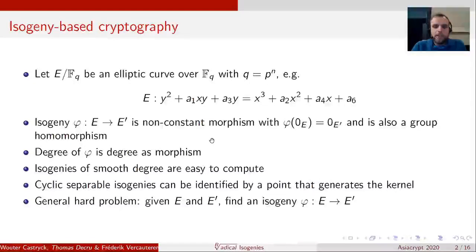Now isogenies of large degree are typically hard to compute, unless they also have a smooth degree, in which case they can be written as the concatenation of isogenies of small degree, and hence they are easier to compute. We'll be only dealing with cyclic separable isogenies, which means they can be identified by a point that generates the kernel. So during this talk, we'll interchangeably use the terms isogeny, or kernel generator, or point that generates the kernel.